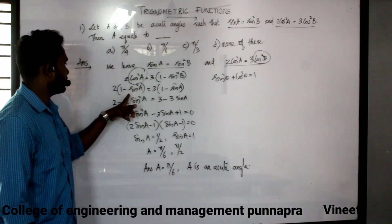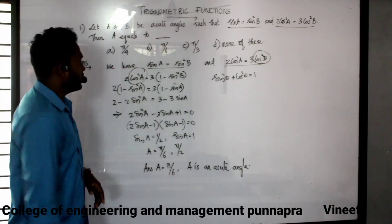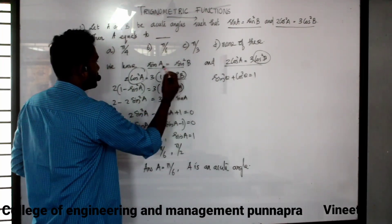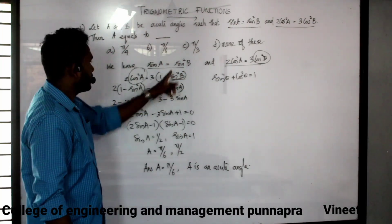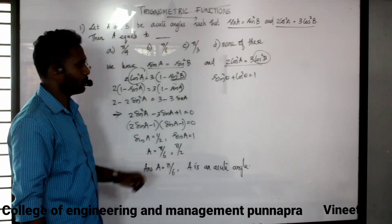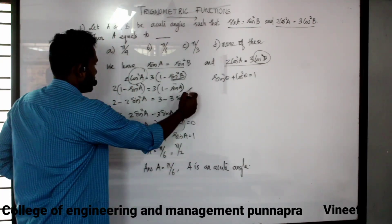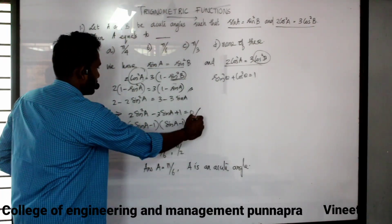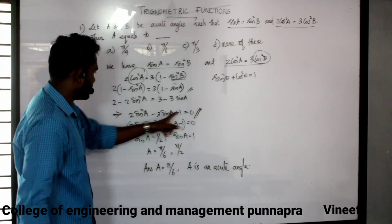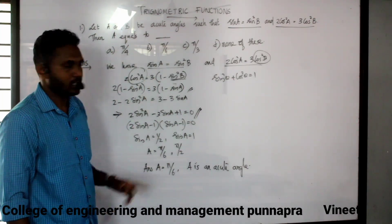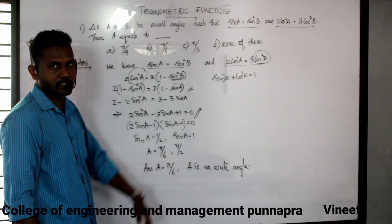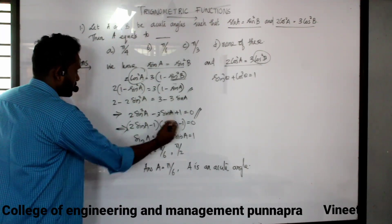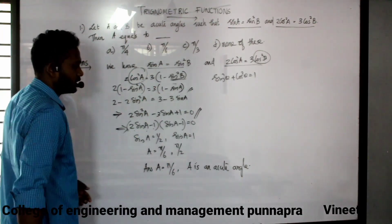We can give it the cos square b, so the statement changes. Working with sin square — we get 2 sin square a minus 1 into sin a minus 1, so it equals 0.